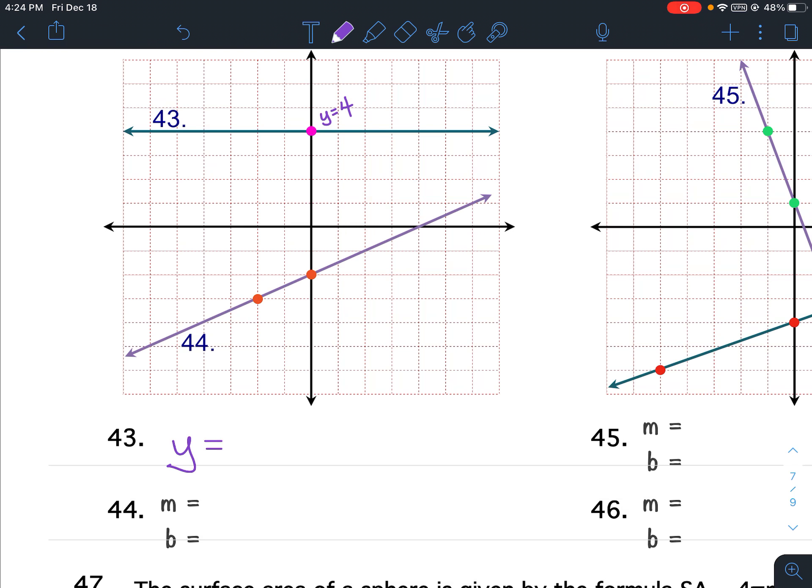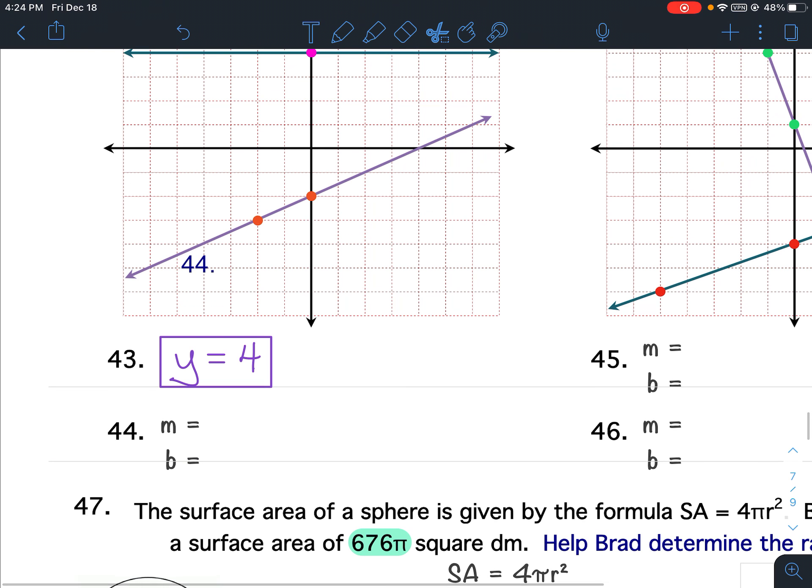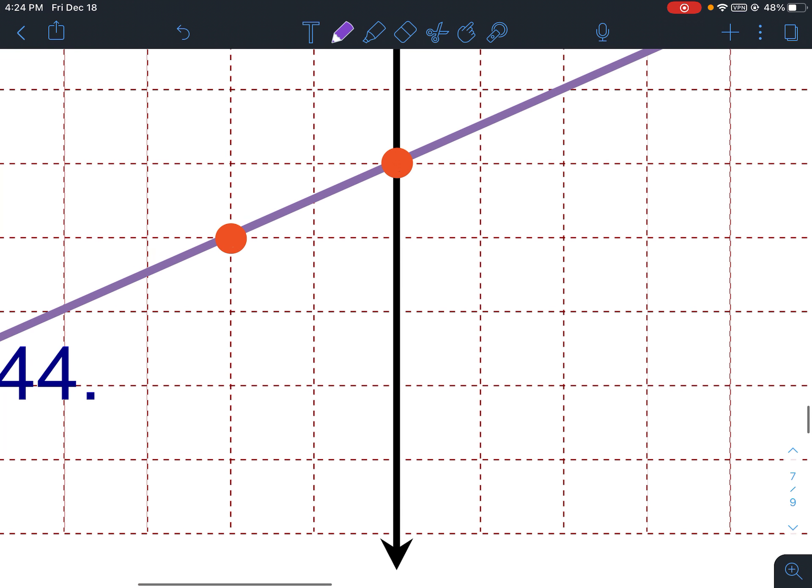44. Alright, for 44, that is a slanted line. So, for slanted lines, we need to find the y-intercept and the rise and the run. So let's start with the y-intercept.